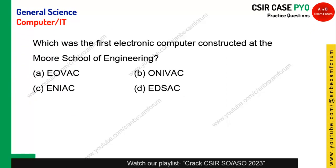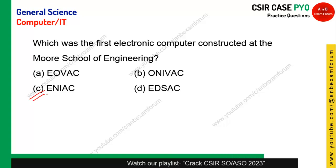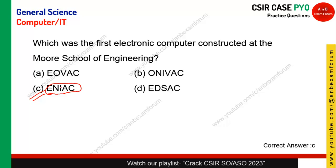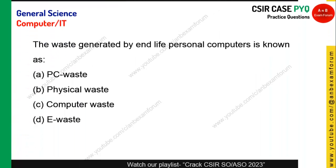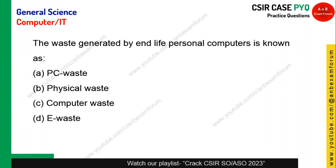Which was the first electronic computer constructed at Murray School of Engineering? It is the Electronic Numerical Integrator and Computer — ENIAC. ENIAC is the first electronic computer. Option C is the right answer.